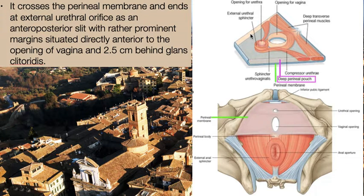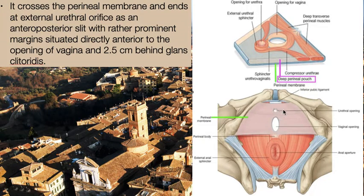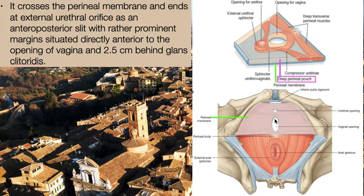The female urethra crosses the perineal membrane — the urethral opening in the perineal membrane can be seen here — and ends as the external urethral orifice, an anteroposterior slit with rather prominent margins, situated directly anterior to the opening of the vagina, 2.5 centimeters behind the glans clitoridis.